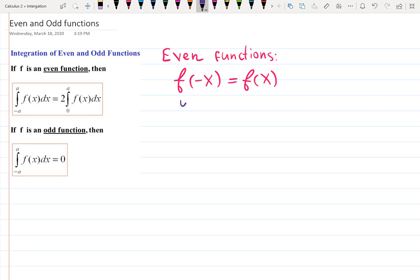Examples of those functions are, for example, y equals x squared. If I want to check what's happening with y equals negative x and everything squared, then it's the same thing as x squared, so the negative sign just disappears.